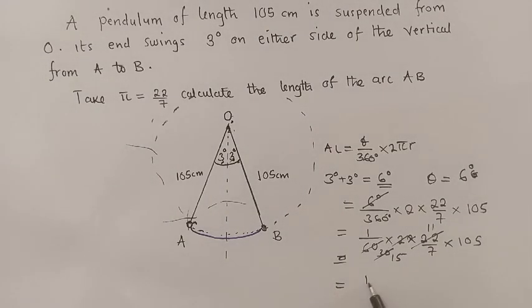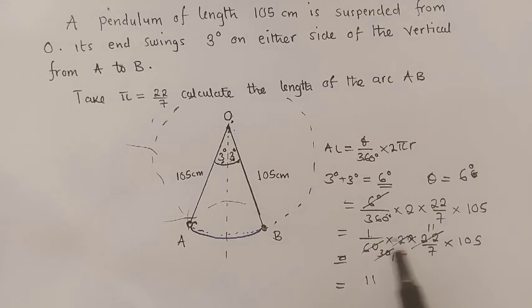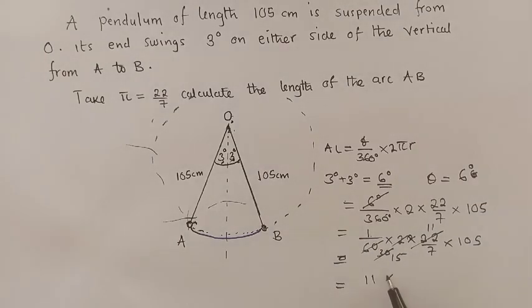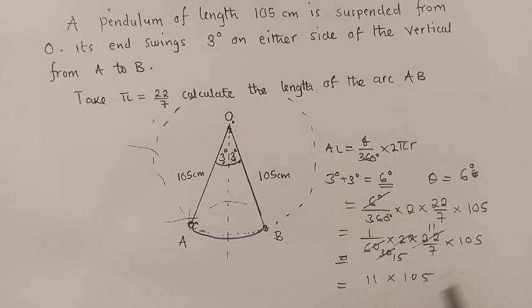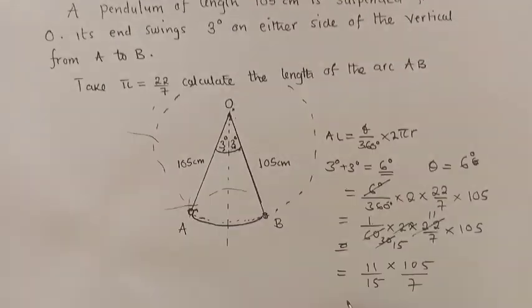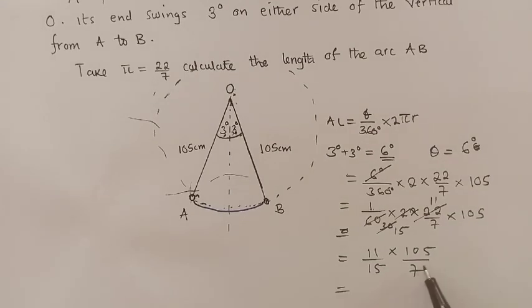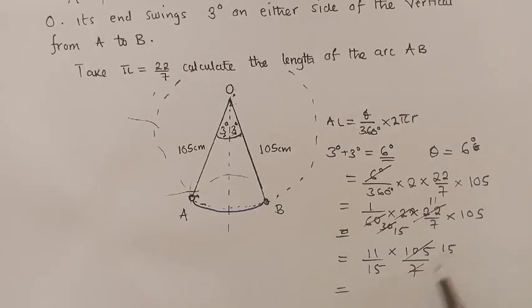11 times 105 over 15 over 7. This 7 can go into 105 how many times? 15 times. So we remain